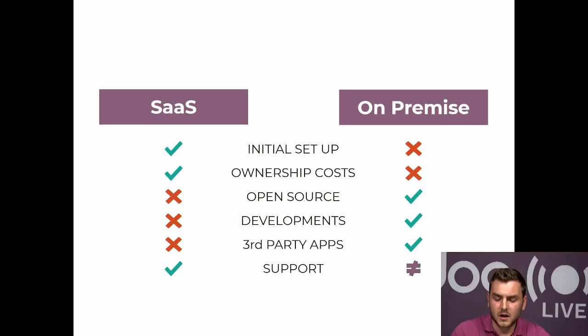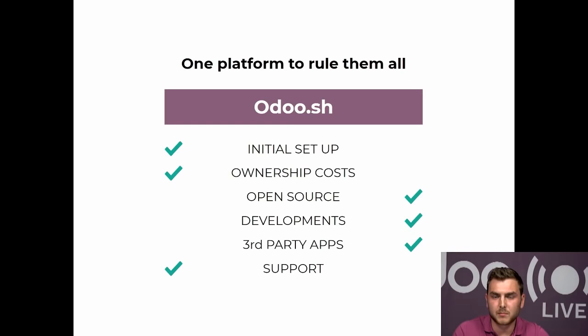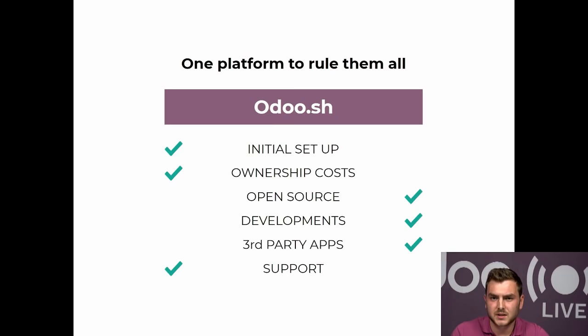Now, how does Odoo SH compare to these hosting options? It's very simple. If we were to remove the red crosses, we get Odoo SH. Odoo SH is the one platform to rule them all — that's what we say internally — because Odoo SH has all the advantages of both hosting methods. Basically, Odoo SH is a development platform, a project management tool, a great tool for end users, and a great testing tool. It offers all the advantages we discussed, which makes it amazing.